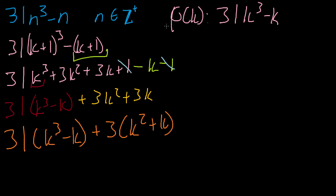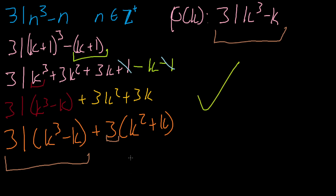We've now shown that (k+1)³ - (k+1) equals (k³ - k) plus 3(k² + k). By our inductive hypothesis, k³ - k is divisible by three, and 3(k² + k) is clearly divisible by three, so their sum is divisible by three. We have proven the inductive step. That's the basics of proof by induction. Strong induction is slightly different — you do a few more base cases and inductive steps — but the core idea is the same. This is mathematical induction.